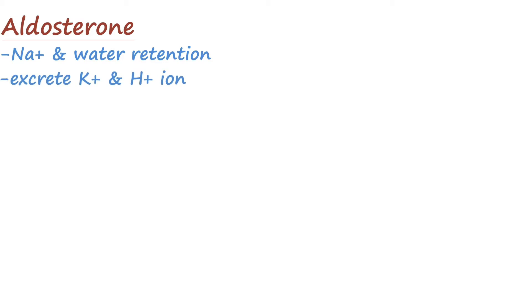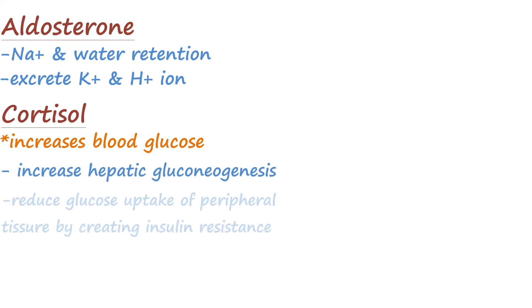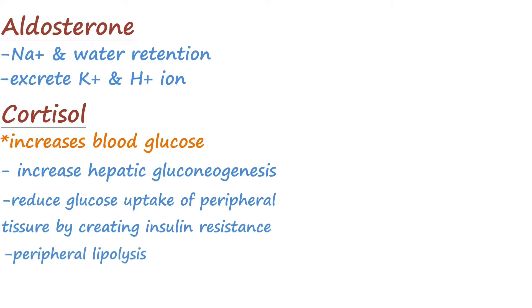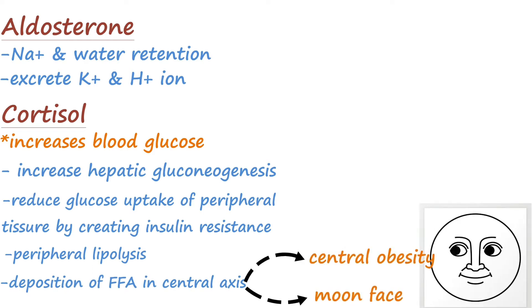Moving on to the glucocorticoid cortisol: it increases blood glucose levels by increasing hepatic gluconeogenesis. At the same time, it reduces the uptake of glucose by peripheral tissues, creating insulin resistance. It increases fat lipolysis, leading to peripheral lipolysis but deposition of free fatty acids on the central axis, resulting in central obesity and moon facies. It also increases protein catabolism and suppresses immune functions of the body.